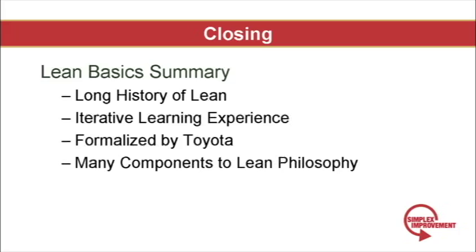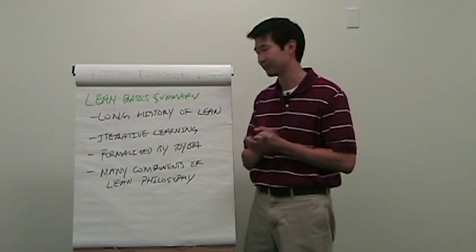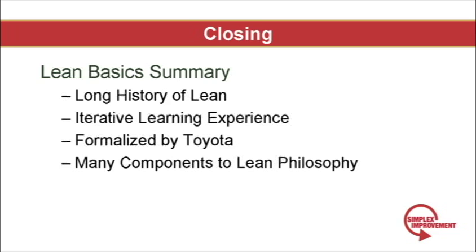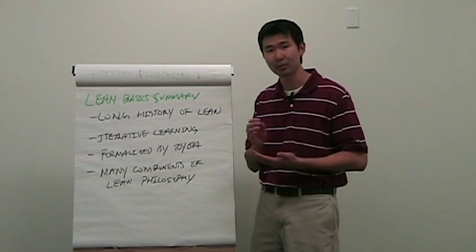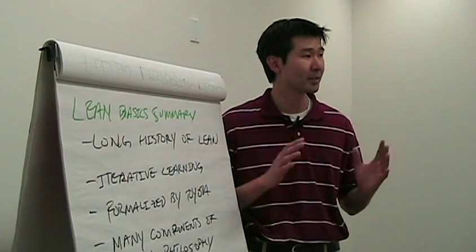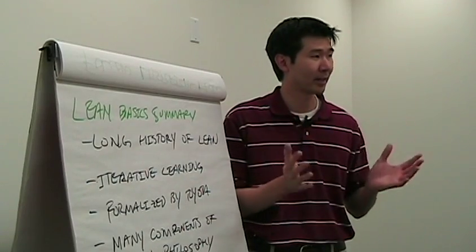Here's a summary of what we learned. Lean has a very long history — I started the lesson at Adam Smith, but some say it even predates him. The reason I started with Adam Smith and went forward is to show that lean is not just a flavor of the month or something that showed up in the last five years. Next, lean was developed through an iterative learning process throughout history: Adam Smith, Frederick Taylor, Henry Ford, Kiichiro Toyota — each man taking the previous contributor's work and developing it further into what we know as lean manufacturing today. About 60 years ago, Toyota began to formalize all this learning and put it into a comprehensive system we know as lean today. Finally, lean has many components — it is one business philosophy, broken down into easy-to-understand steps, but it functions as one comprehensive philosophy.